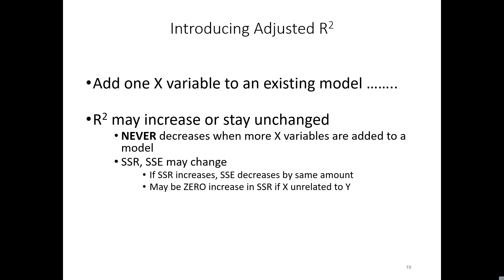You might say, hey, adding variables to the model — maybe they have more predictive ability — what's wrong with that? And I mean any variable. For instance, we're making a model of alumni giving and we add the number of black t-shirts I saw on a Tuesday afternoon on June the 12th while I was out at the mall. Now, what does that have to do with alumni giving? It doesn't.